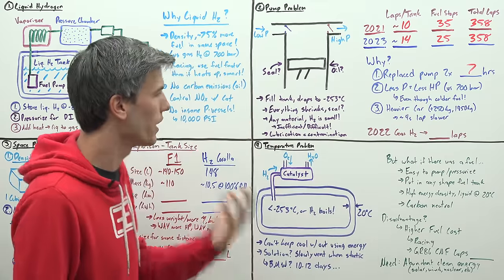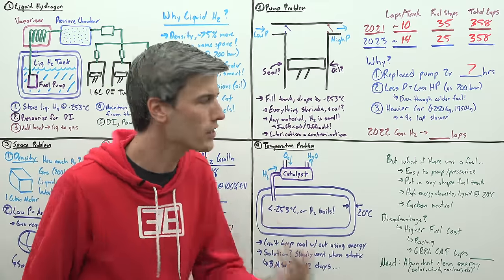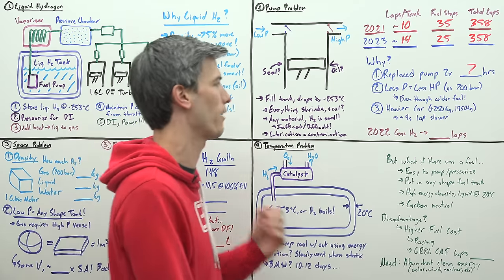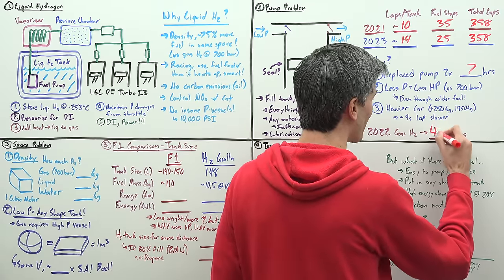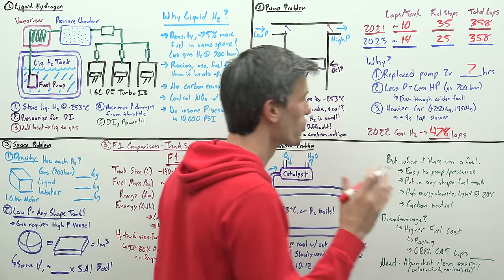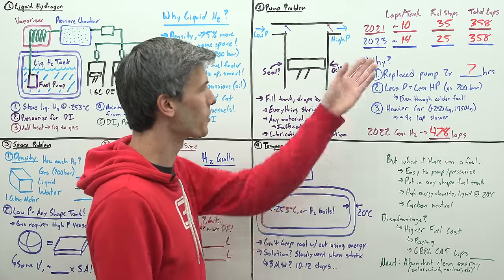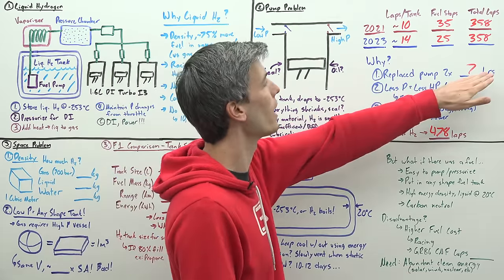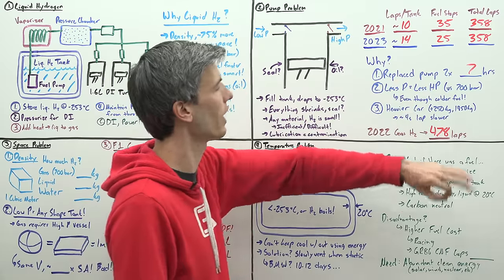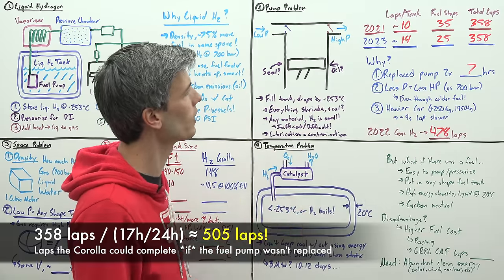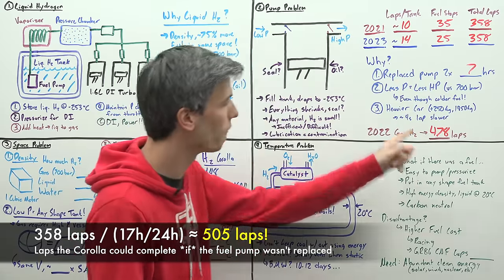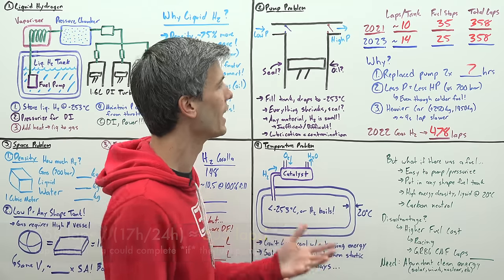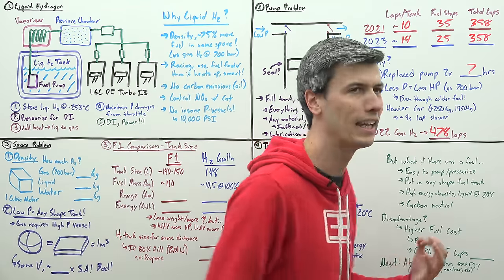Unfortunately to add insult to injury, if you look at the results from 2022 when the GR Corolla was running on gaseous hydrogen at Fuji, it completed 478 laps, so 120 additional laps versus the liquid hydrogen version. If you say let's take back these seven hours just for racing, that puts the liquid hydrogen at about 505 laps, very close to what it got last year. Not really that big of an improvement even though it's a massive improvement in energy density.